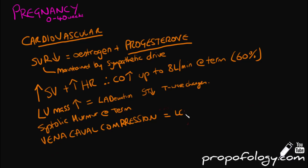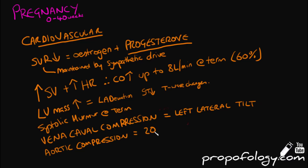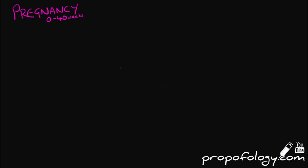This decreases cardiac output as per Starling's law, manifesting as decreased blood pressure and engorged vertebral veins. You can alleviate vena caval and aortic compression by using a left lateral tilt. Aortic compression becomes relevant at about 20 weeks gestation when the woman is lying supine, decreasing cardiac output and uteroplacental blood flow. The left lateral tilt should be at least 15 degrees, achievable with an operating table or pillows.